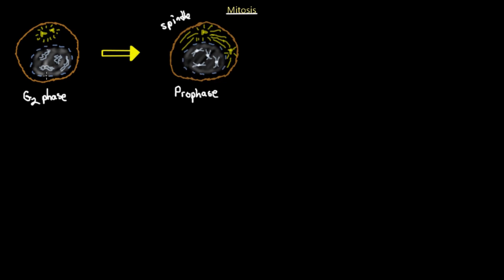Another notable change in prophase is that the nucleus actually begins to disappear. The nuclear membrane is dissolving, so the chromosomes are floating around in the cytoplasm. This disappearance reflects a shutdown of all types of RNA synthesis, including ribosomal RNA made in the nucleus. The process of protein synthesis is completely halted as soon as prophase begins because the nucleus is dissolved.